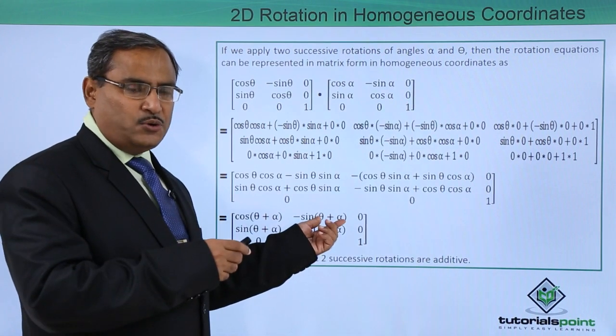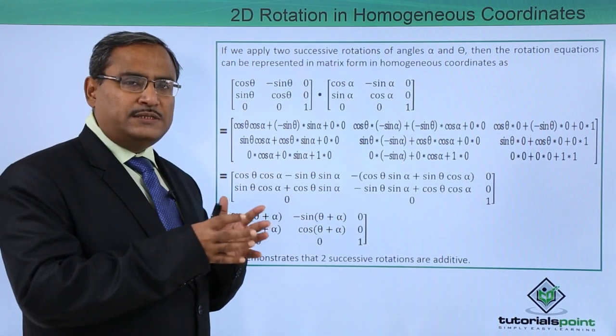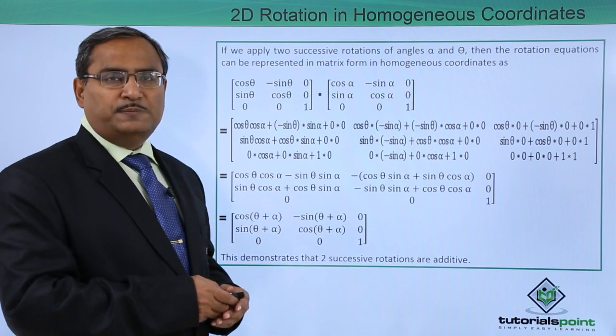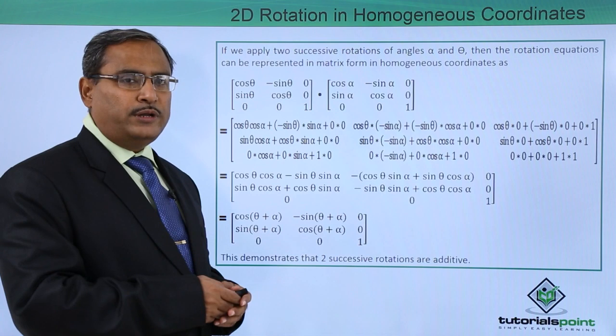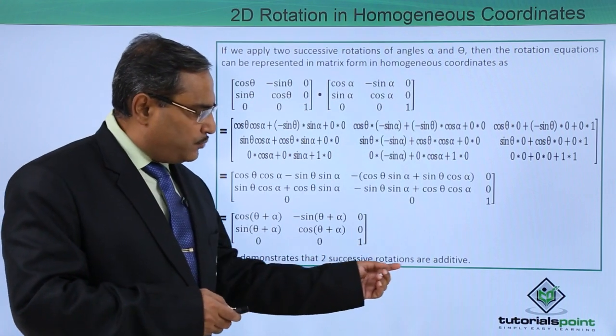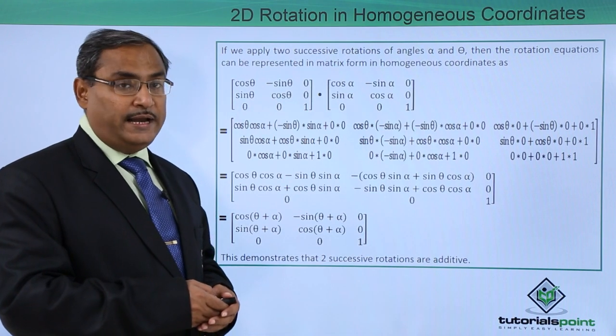The resultant rotation will be if you consider that alpha plus theta is a total rotation angle. Accordingly, this particular transformation matrix is supporting that very fact. This demonstrates that two successive rotations are additive in nature.